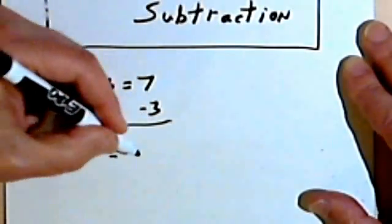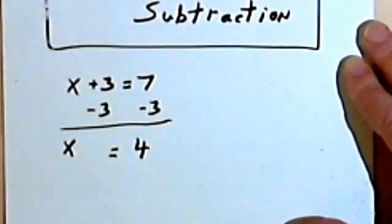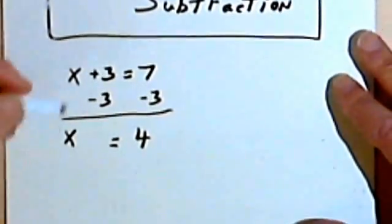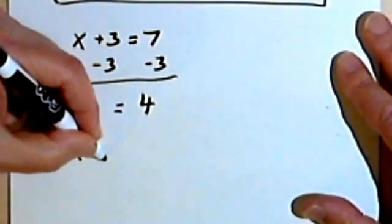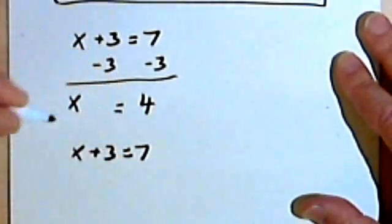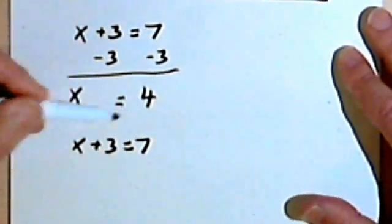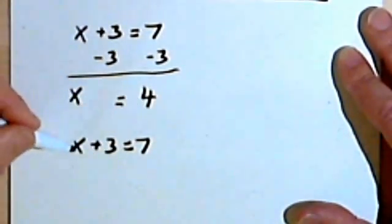And now I've got 7 minus 3, and that's going to be a 4. If I want to check these, I can go back to the original problem. x plus 3 equals 7. If I think that x equals 4, I'll replace the x with the 4.